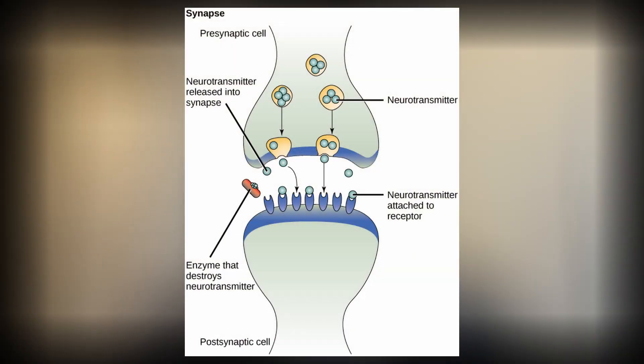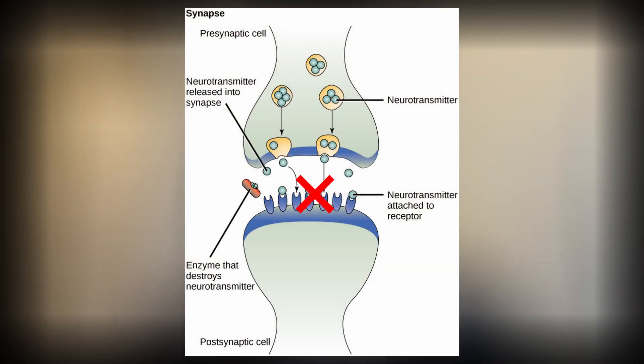Atropine works competitively to that of acetylcholine by binding to these muscarinic receptors. It actually blocks the effects of acetylcholine, therefore blocking the rest and digest response on smooth muscle and other peripheral autonomic nerves. Ultimately, the response is favored more towards the fight or flight response.